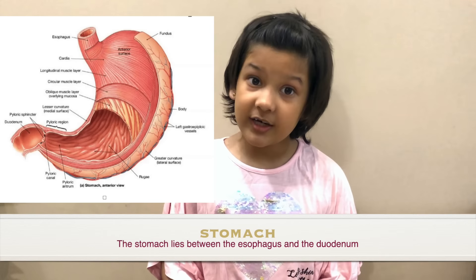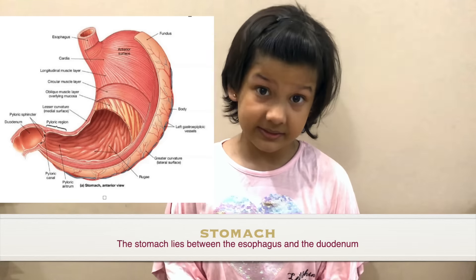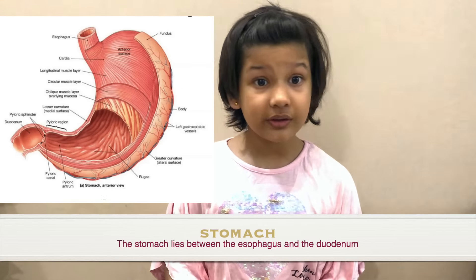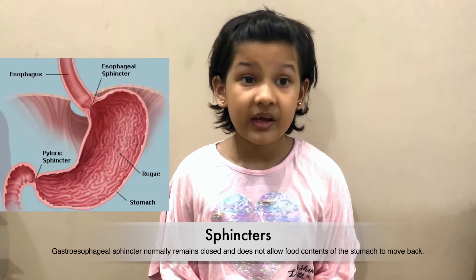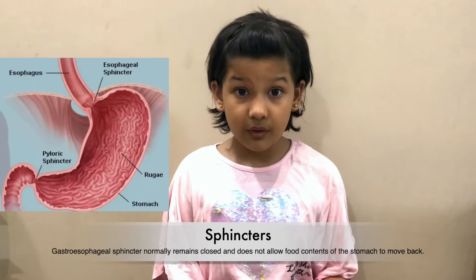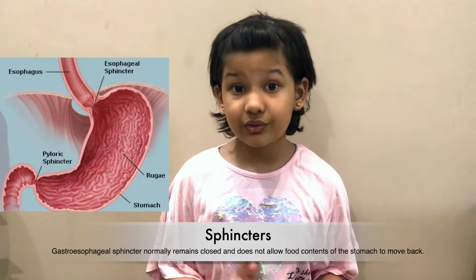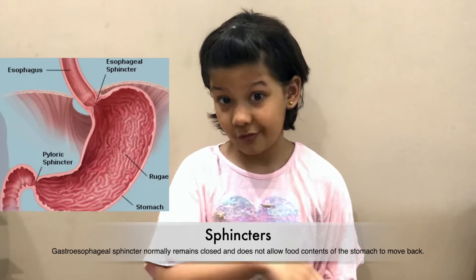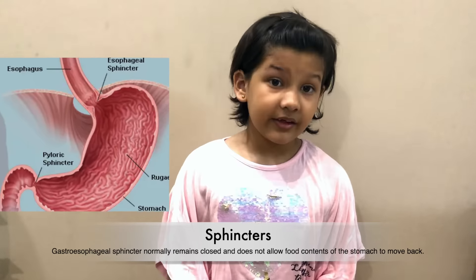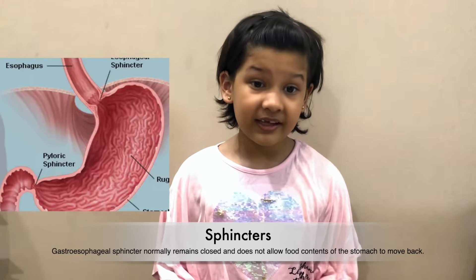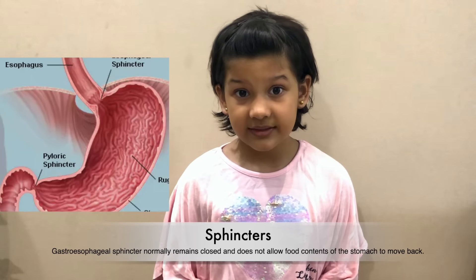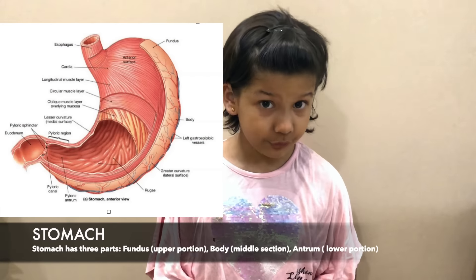Now coming to our stomach. Our stomach has a ring of muscles that control the opening and closing of the stomach, and those ring of muscles are known as sphincters. The sphincter muscles from the esophagus to the stomach are the lower esophageal sphincters, and the sphincters that let the food leave the stomach are the pyloric sphincters.